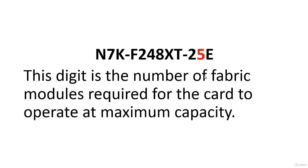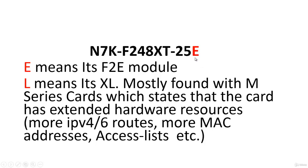The last character, E, generally means it is an F2E — a second-generation E module — and is only used in the F series, not the M series. If the suffix is L, it means the card has capacity to handle additional resources: more IPv4 routes, more IPv6 entries, more ACLs, and more MAC address table entries. L is generally used with the M series. If there is no suffix, that is also normal.